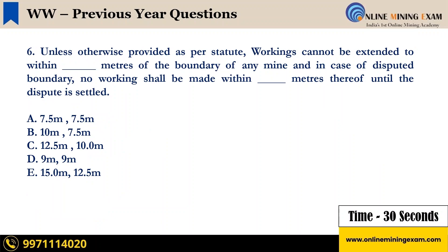Unless otherwise provided as per statute, workings cannot be extended to within blank meters of the boundary of any mine, and in case of disputed boundary no working shall be made within blank meters thereof until the dispute is settled. A. 7.5 m and 7.5 m. B. 10 m and 7.5 m. C. 12.5 m and 10 m. D. 9 m and 9 m. E. 15 m and 12.5 m. Your time starts now.